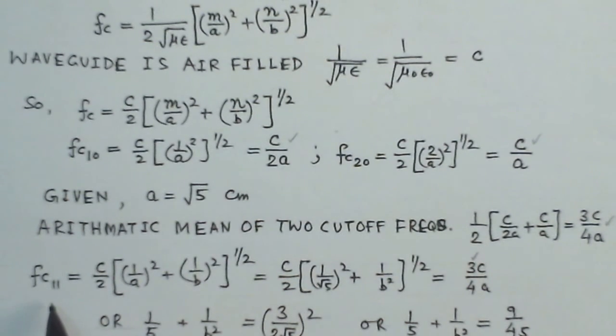Now, we find out the cutoff frequency for TE11 mode. Fc11 is C by 2 times 1 by A whole squared plus 1 by B whole squared to the power half. This comes out to be C by 2. We substitute for value of A that is root 5. So, this is square 1 over B square half. Now, this cutoff frequency equals the arithmetic mean of the two cutoff frequencies which is 3C over 4A.